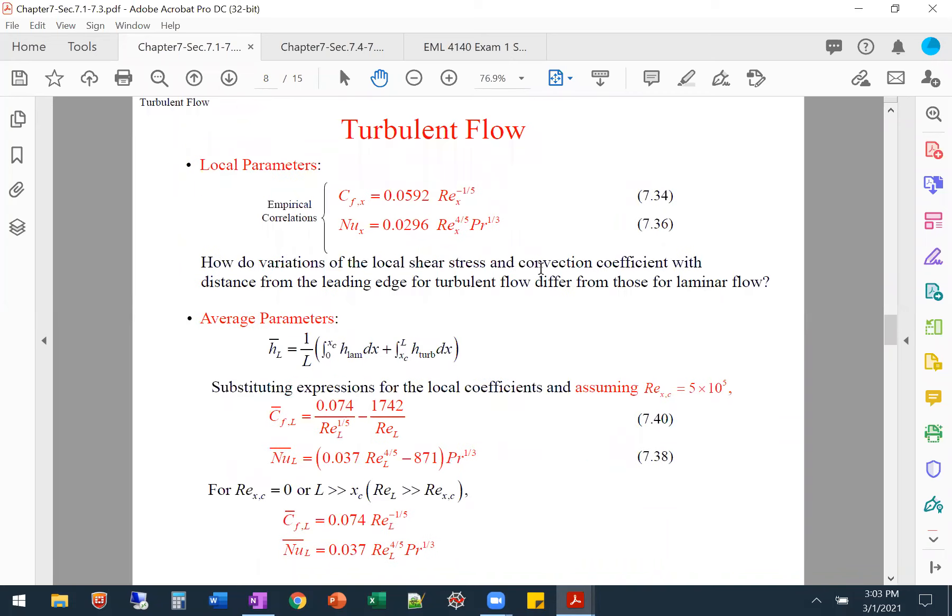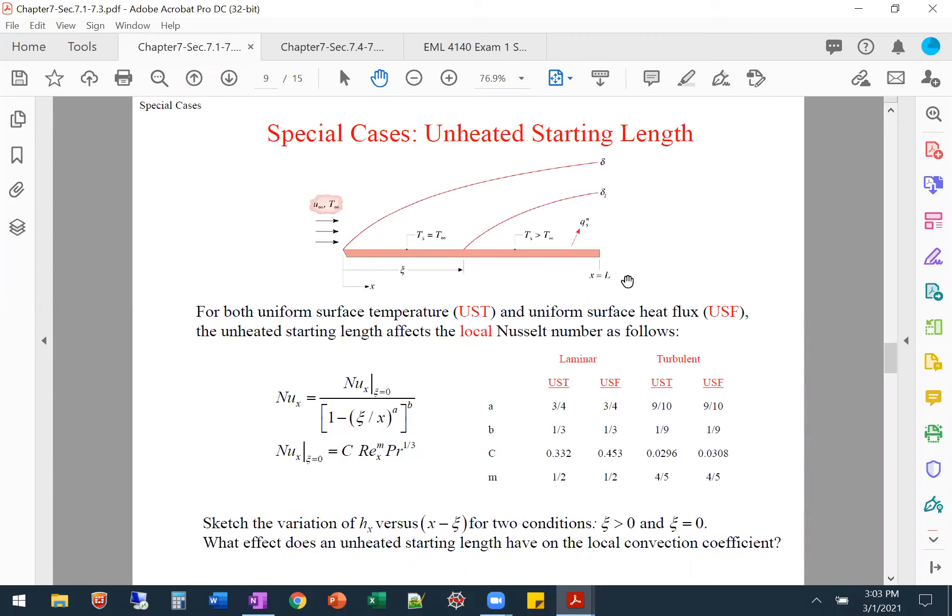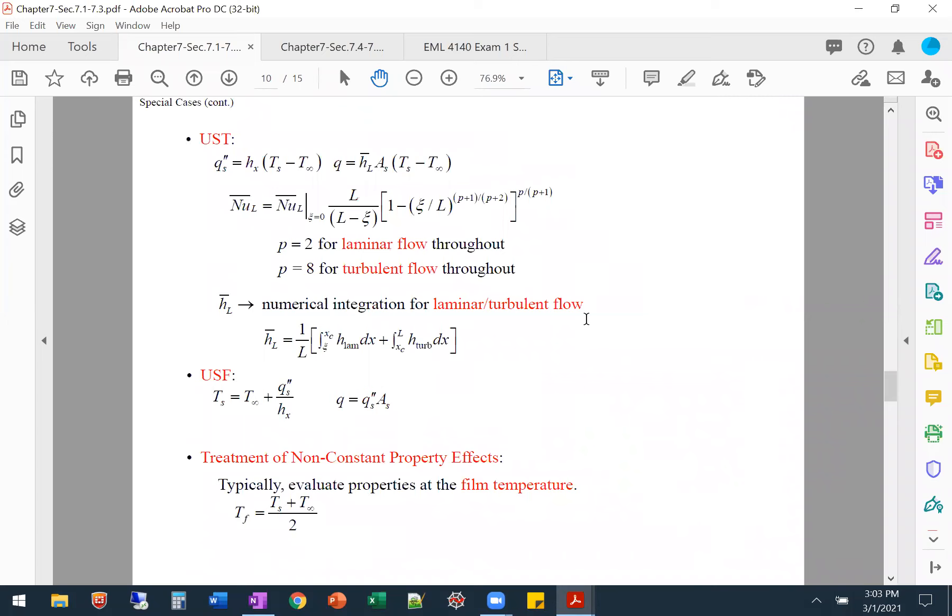Then we have the case for turbulent, local turbulent, average turbulent, where it's when it has transition or when it's tripped. And here's how we get the local Nusselt number for an unheated starting length, and then the average Nusselt number for that unheated starting length.